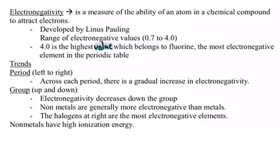A scientist by the name of Linus Pauling devised a range where he gave the elements electronegative values that range from 0.7 to 4.0. The element that has the highest electronegative value, which is 4.0, is fluorine. Therefore, fluorine is the most electronegative element in the periodic table.